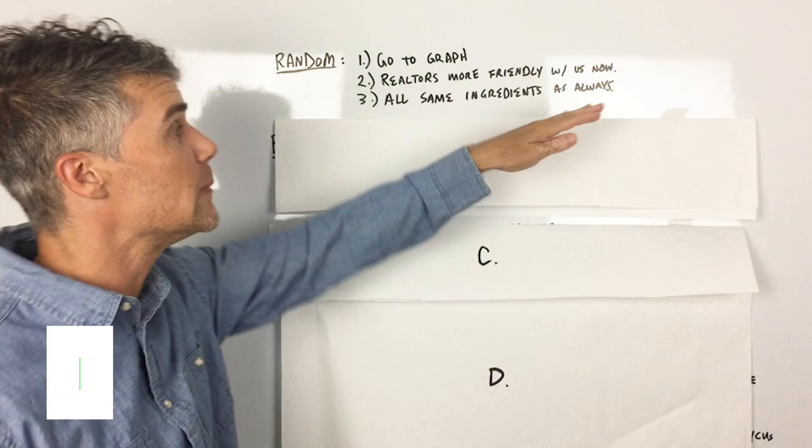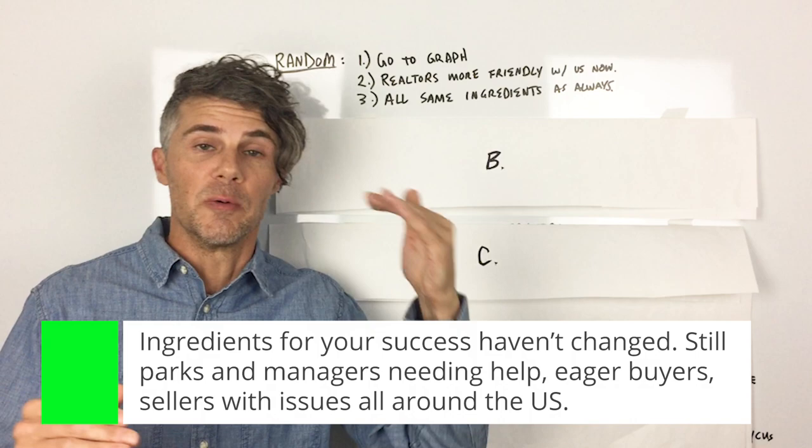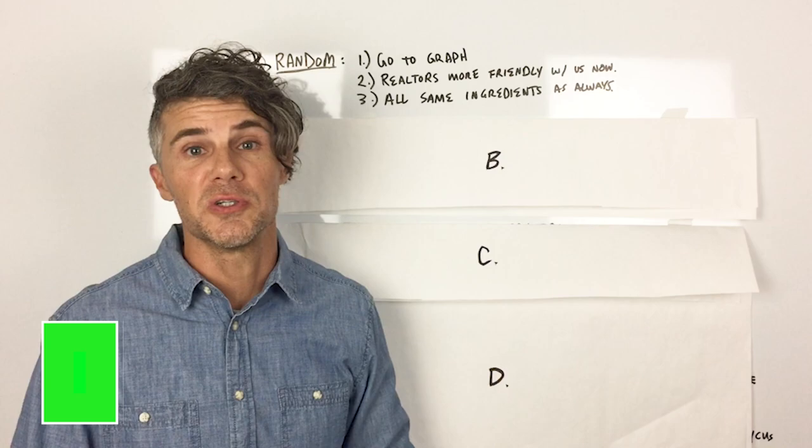And all the same ingredients are still there. We're still investing in mobile homes. If you've been sitting on the sidelines, I'm not sure what you're waiting for. The market's going up, it's going down, it's flat. We want to purchase well under retail and have an exit strategy, two exit strategies when you're selling and always do smart deals.